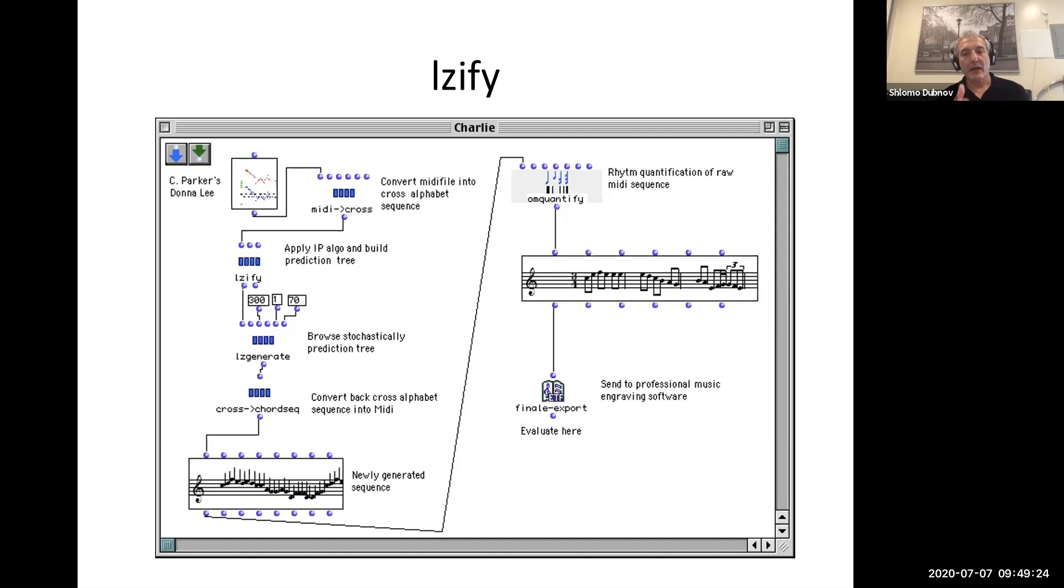Once you do from MIDI to some kind of cross alphabet, now you have a sequence. You run the Lempel-Ziv incremental parsing algorithm, and then you generate using the motif continuation method. You go back from your cross alphabet to MIDI, to notes, and then you generate a new sequence. Of course there's some effort to make it look correctly as a musical notation, so there's extra steps taken to divide this into bars and represent correctly the timing. The cross alphabet also has to treat not only the note appearances but also continuations or different durations. If you hold a note, how do you represent it as a note that continues over several MIDI ticks?